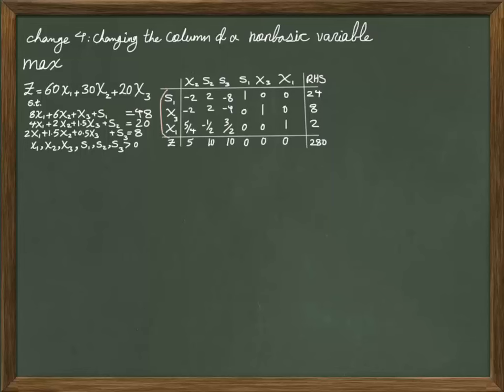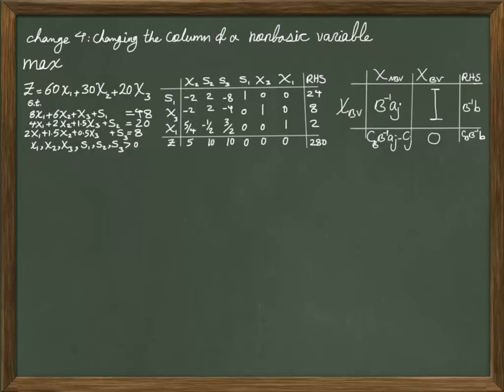Given the basic variables in the optimal table, using a system of matrix equations we are able to calculate all the numbers inside this table. Now in this change, which is change 4, we are trying to change the column of a non-basic variable in the original table and figure out how that would impact our final solution. Changing the column of a non-basic variable is indeed changing the technological coefficient of that decision variable in the original table.